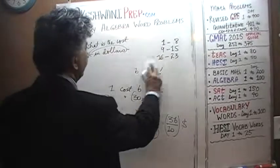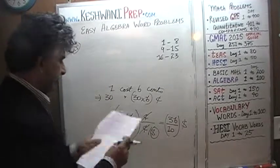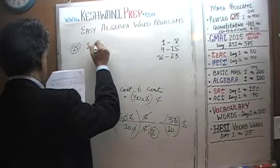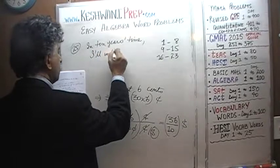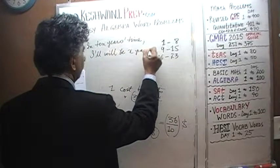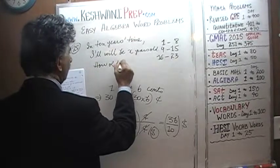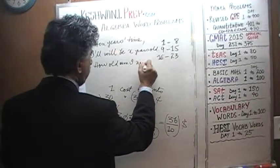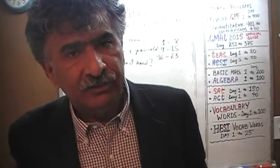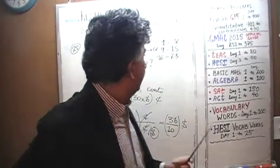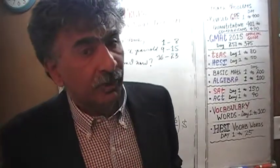Number 25. In 10 years time I will be X years old — how old am I now? The simplest, easiest, quickest way to tackle this problem is to convert this algebraic problem into an arithmetic problem by making up a number for X.